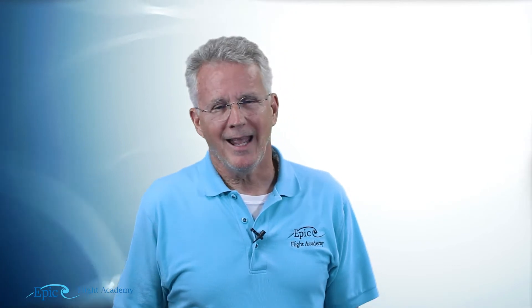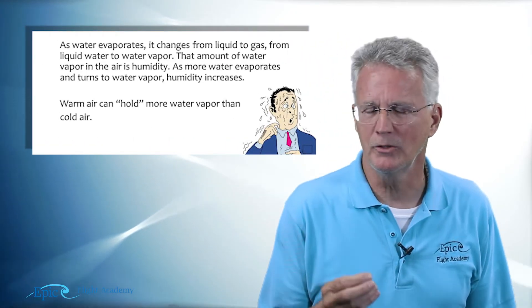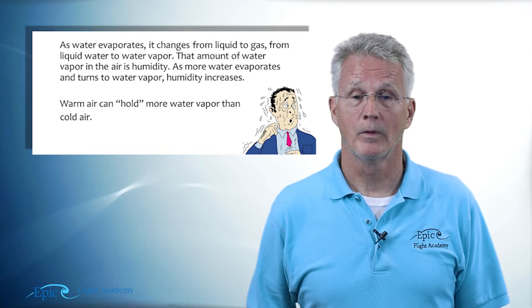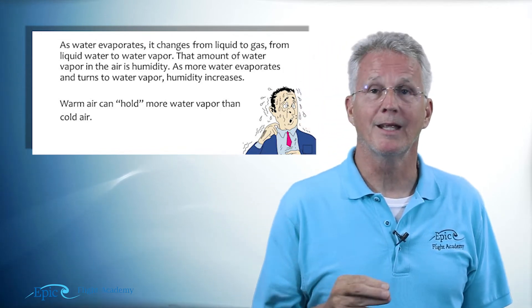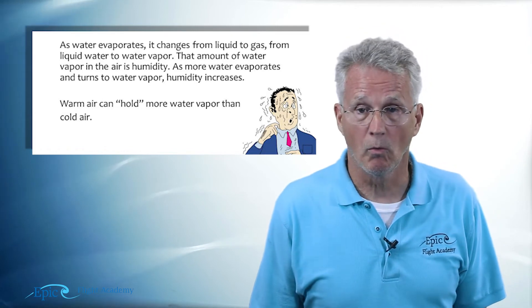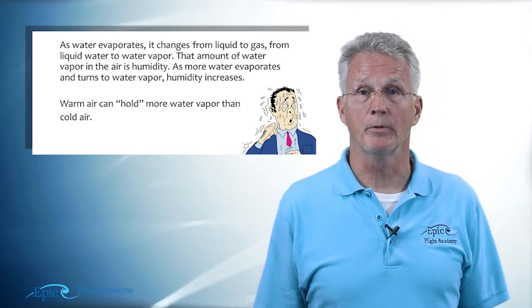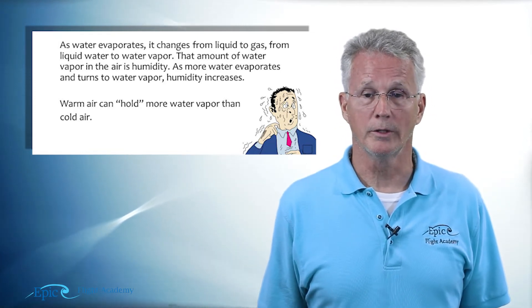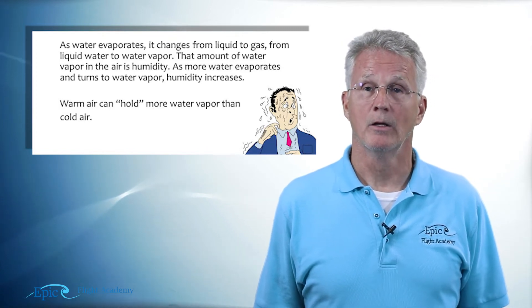These concepts are important to help us understand meteorology and how weather works. That brings us to humidity. As water evaporates, it changes from liquid to a gas — as we just saw in the previous figure. The amount of water vapor in the air in that gaseous form is humidity. As more water evaporates and turns to water vapor, humidity goes up. Remember: warm air can hold more water vapor than cold air.